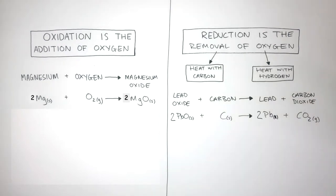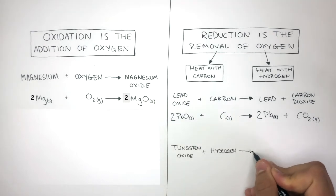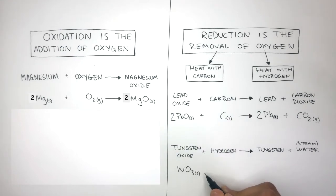An example of reduction using hydrogen is tungsten oxide plus hydrogen reacts to form tungsten plus water as steam. The balanced symbol equation is WO3, S for solid, plus H2, G for gas, reacts to form W, S for solid, and H2O, G for gas. And we put a big three in front of the H2 and then a big three in front of the H2O to balance the equation.